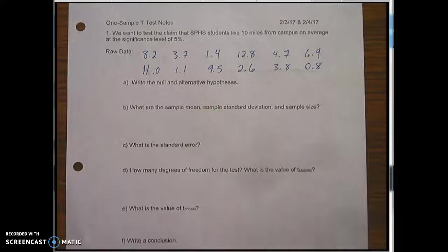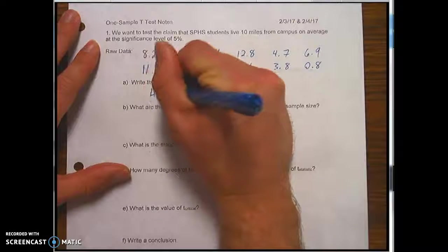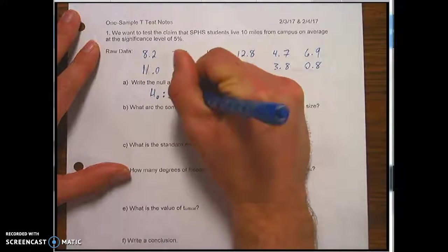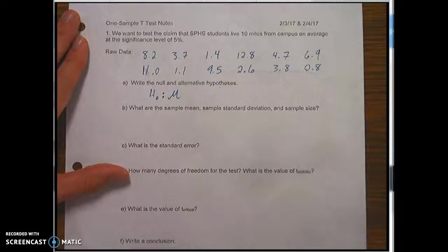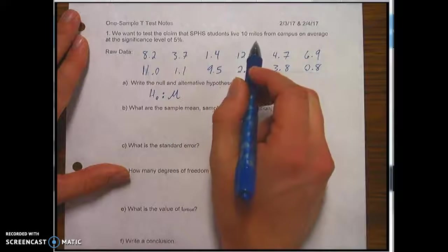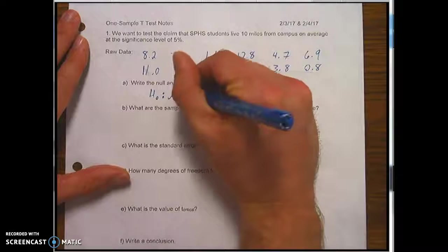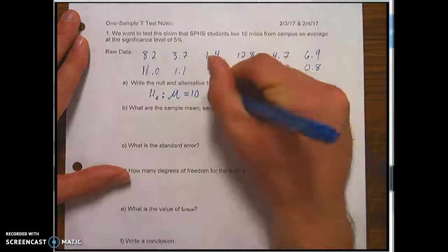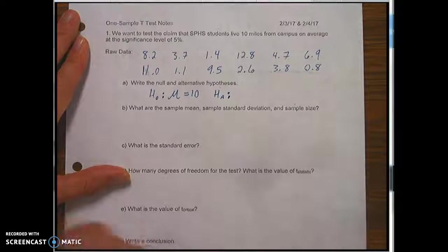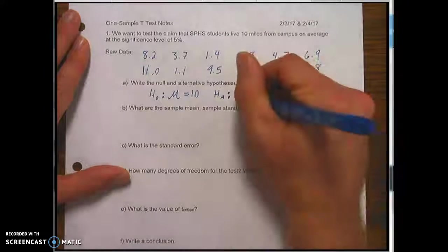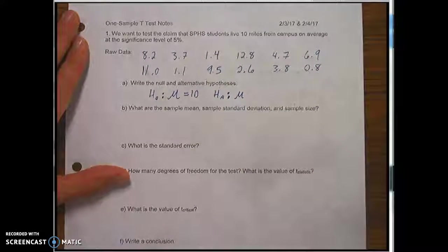Write the null and alternative hypotheses. Remember the null hypothesis is everything is as it's supposed to be, innocent until proven guilty, which means 10 miles. We'll say they live exactly 10 miles from campus.